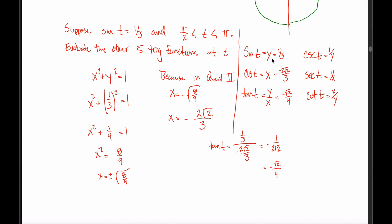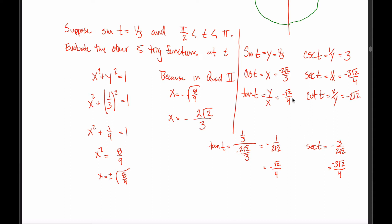The cosecant of t is the reciprocal of sine of t — the reciprocal of 1/3 is just 3. The secant of t is the reciprocal of cosine, so flip −2√2/3 upside down. That puts a radical in the denominator, so rationalize by multiplying top and bottom by √2, giving −3√2/4. For cotangent of t, rather than taking the reciprocal of the rationalized tangent form, it's easier to flip the unrationalized form −1/(2√2) upside down — you get −2√2, the same answer you'd get either way.